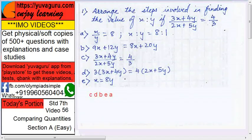Sorry, 3x plus 4y upon 2x plus 5y equals to 4 upon 3. Here you don't have to find the answer of this, you have to find out what steps will you follow. We have to arrange them in sequence.